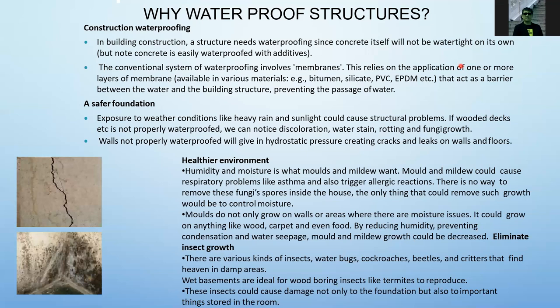You will find cockroaches and ants in areas that are very damp. Wet basements are ideal for wood-boring insects like termites to reproduce. If part of the building is exposed to water and not treated, termites may grow in that area. These insects can damage not only the foundation but also important items inside the room — termites can eat furniture, files, and books. It is therefore very important to have a waterproof structure.